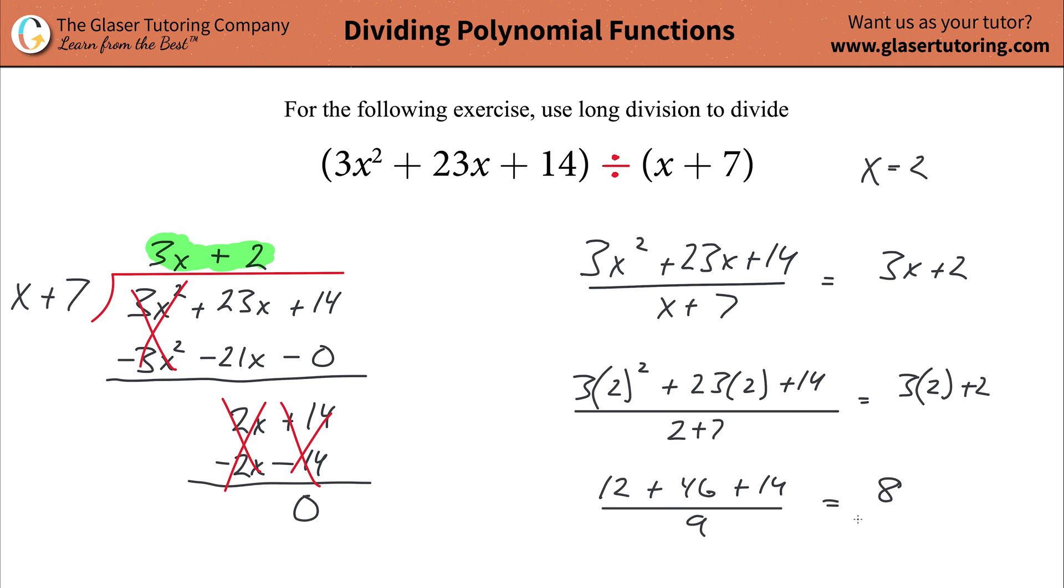Now simplify this on the top. You can do this in a bunch, it doesn't really matter what you do in terms of adding it together. If you take 12, add it to the 14, that's 26. Then when you take 26 and add it to 46, you get 72. So 72 over 9 equals 8. Is this a true math statement? 72 divided by 9 is that 8? Of course it is. So now you know that you did the division correctly and you know this is the correct quotient.